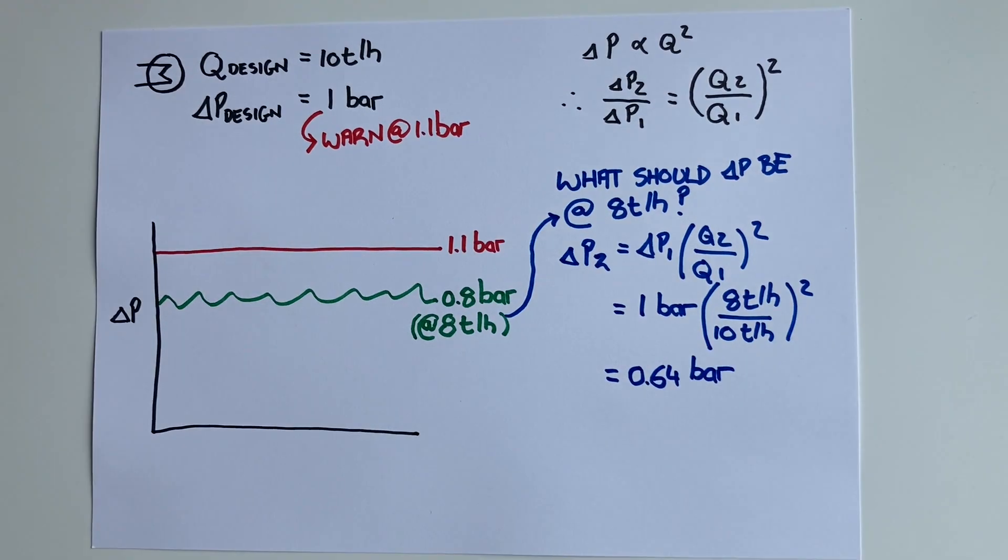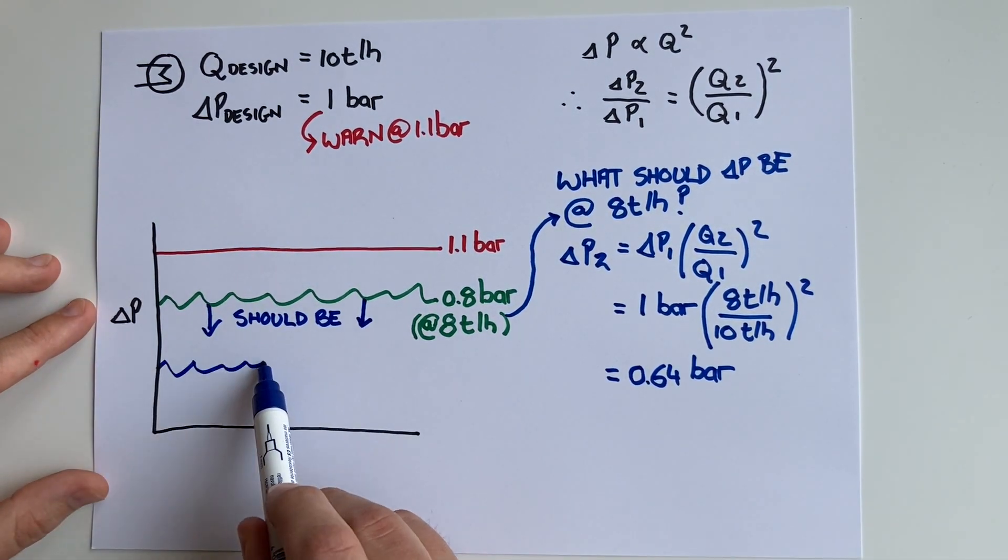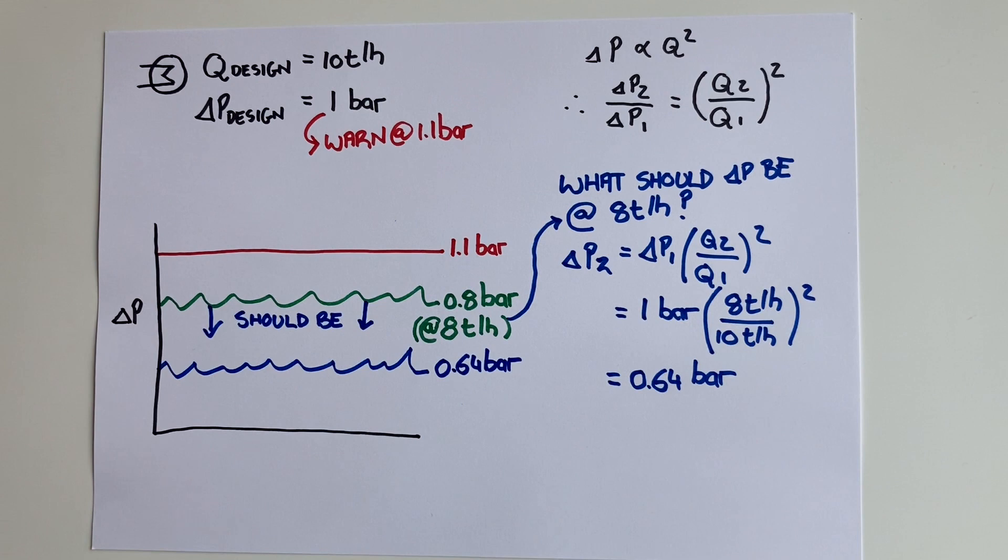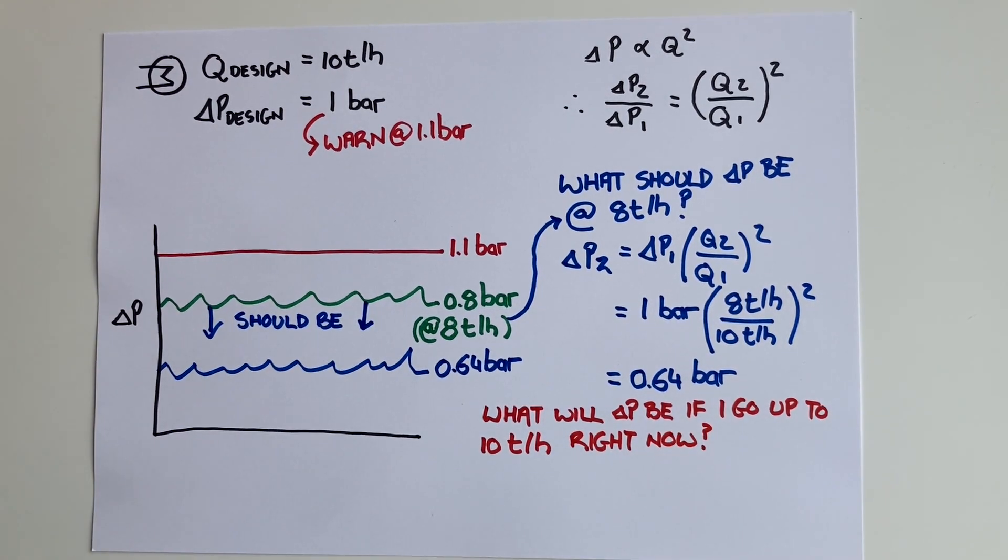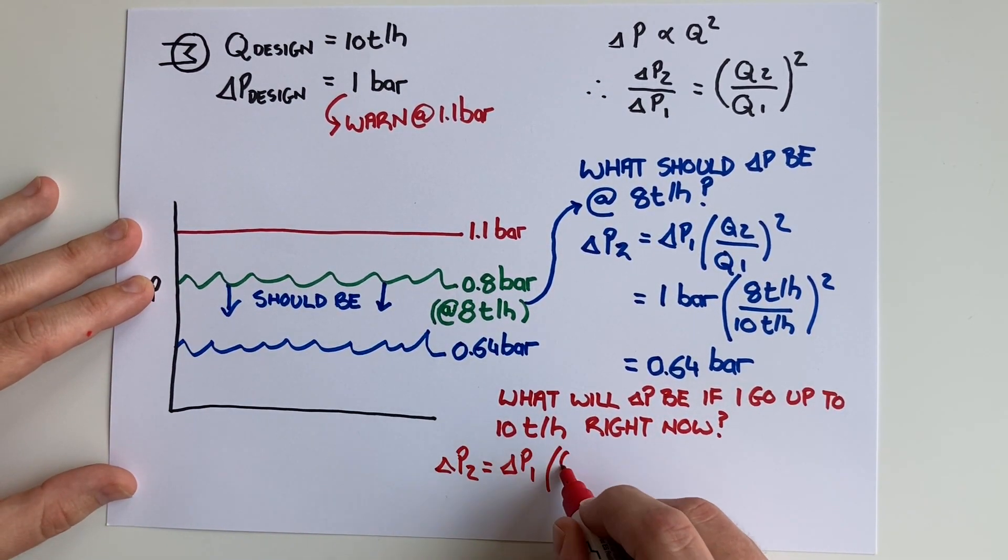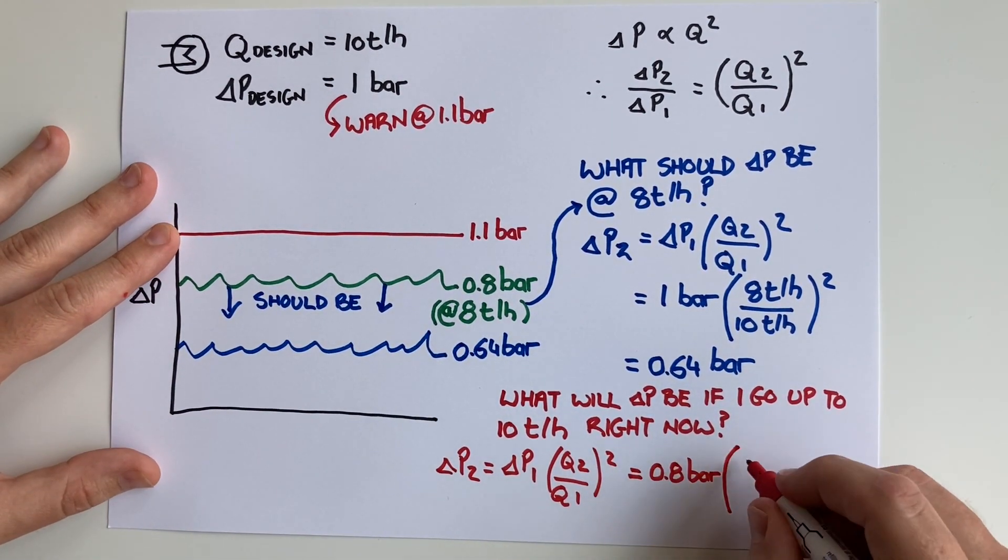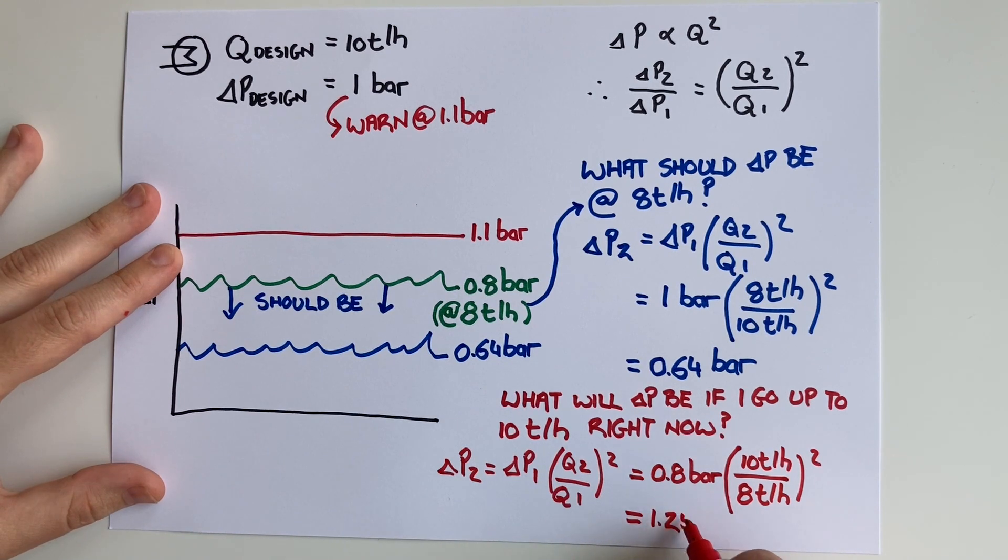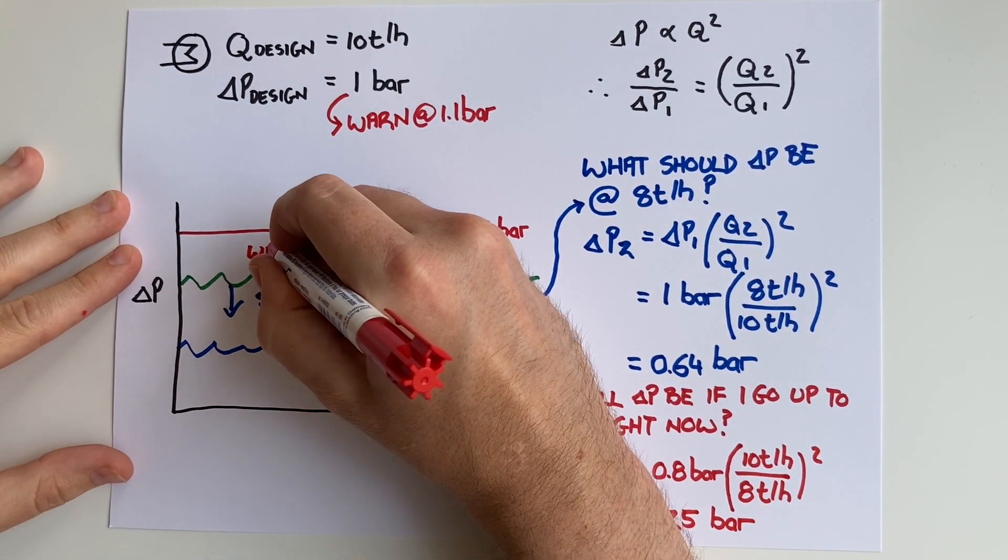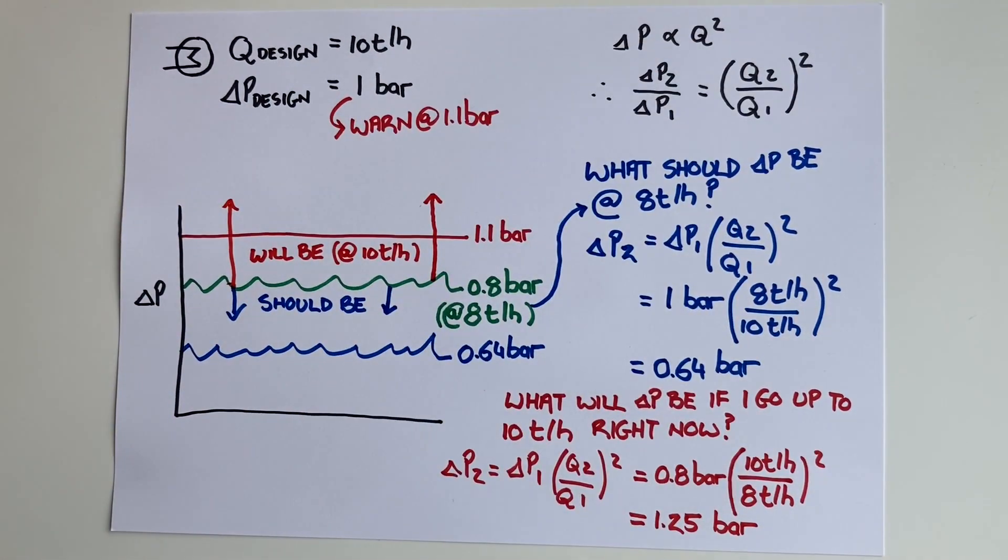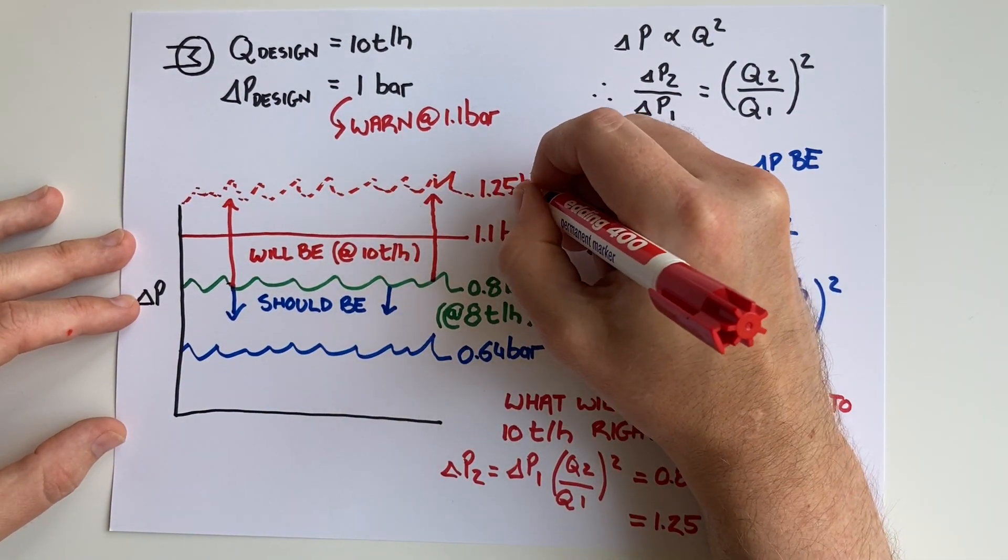What we should do is something we call normalizing the pressure drop. We take the situation as we have it right now and say that since we're not running at design flow rate, we should calculate what the pressure drop would be if we increase the flow rate to the design rate right now. We do this using the exact same equation. So our 0.8 bar at 8 tons per hour actually equates to a pressure drop of 1.25 bar at the design flow rate - 25% more than it should be. If this was the situation in my plant, I risk that I would not be able to process at my design capacity if I haven't oversized my pump or compressor enough.